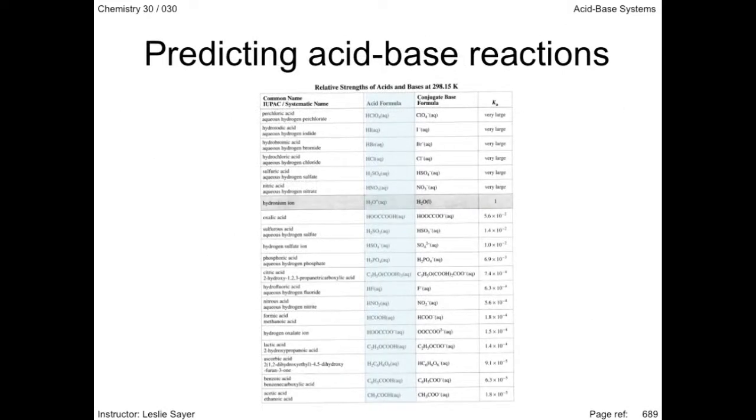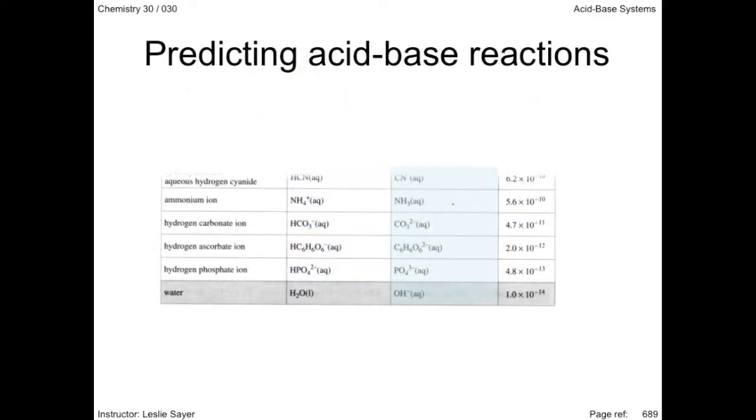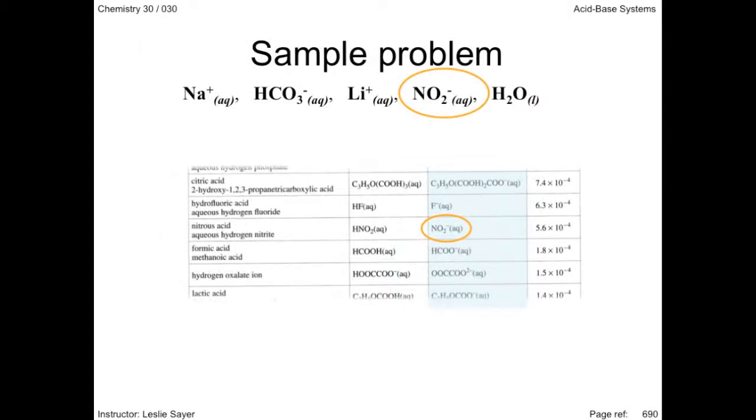Next, starting at the top of the acid column, moving down the page until you find one of the reactants. We will find the hydrogen carbonate ion first. Then, move to the bottom of the conjugate base column and move up the page until you find the other reactant. And the nitrite ion is found next.